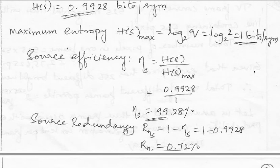Next, he has even asked us to find the redundancy. So redundancy is given by 1 minus efficiency. So 1 minus efficiency, efficiency is 0.9928. So if you substitute, you will get the redundancy as 0.72 percent.